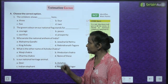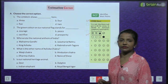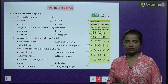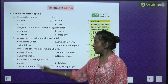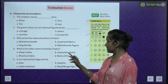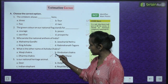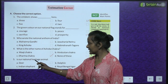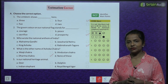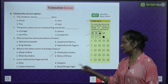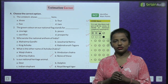Who wrote the national anthem of India? Rabindranath Tagore wrote the national anthem of India. What is the other name of Ashok Chakra? It is the Dharma Chakra. Which is our national heritage animal? The Indian elephant is our national heritage animal.